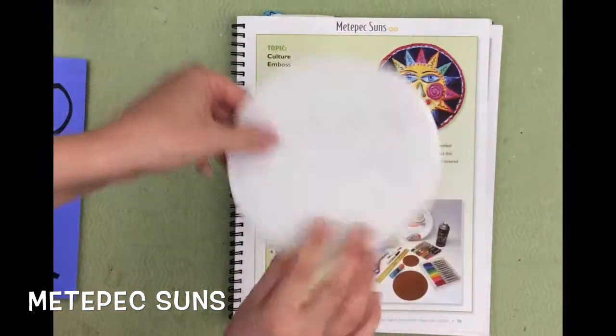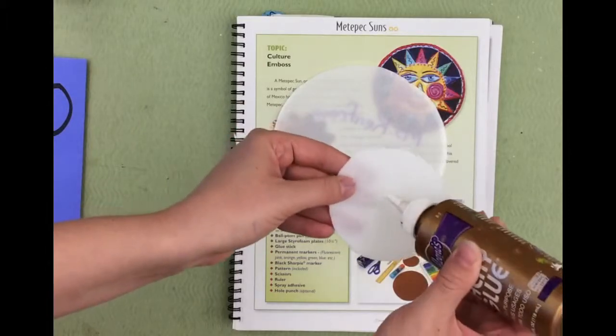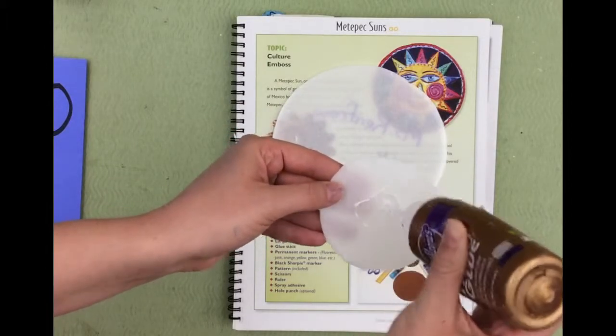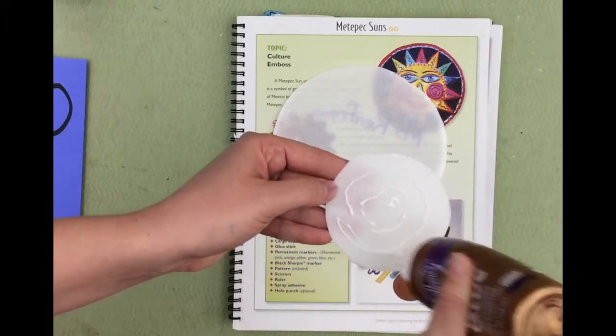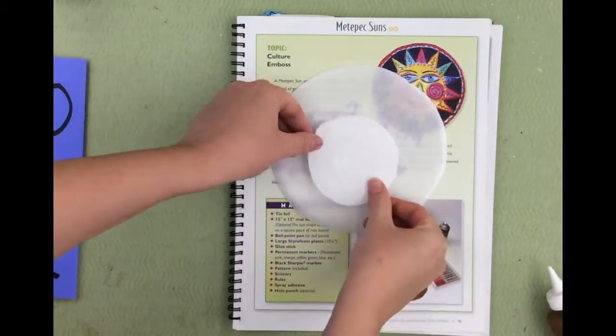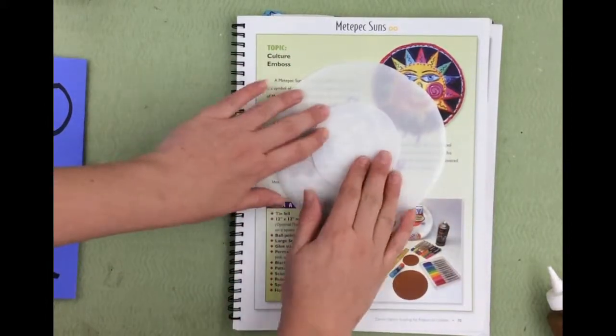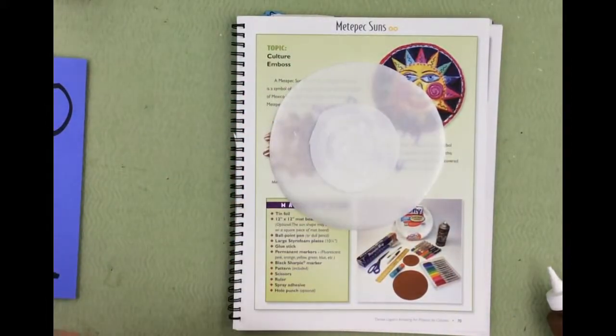The next thing I'm going to do is flip my circles back over and get some glue. Now we don't need a whole lot of glue, just a little bit to cover the whole circle, not too thick, and place it in the center of my bigger circle. So that's going to be my sun on my outer circle.